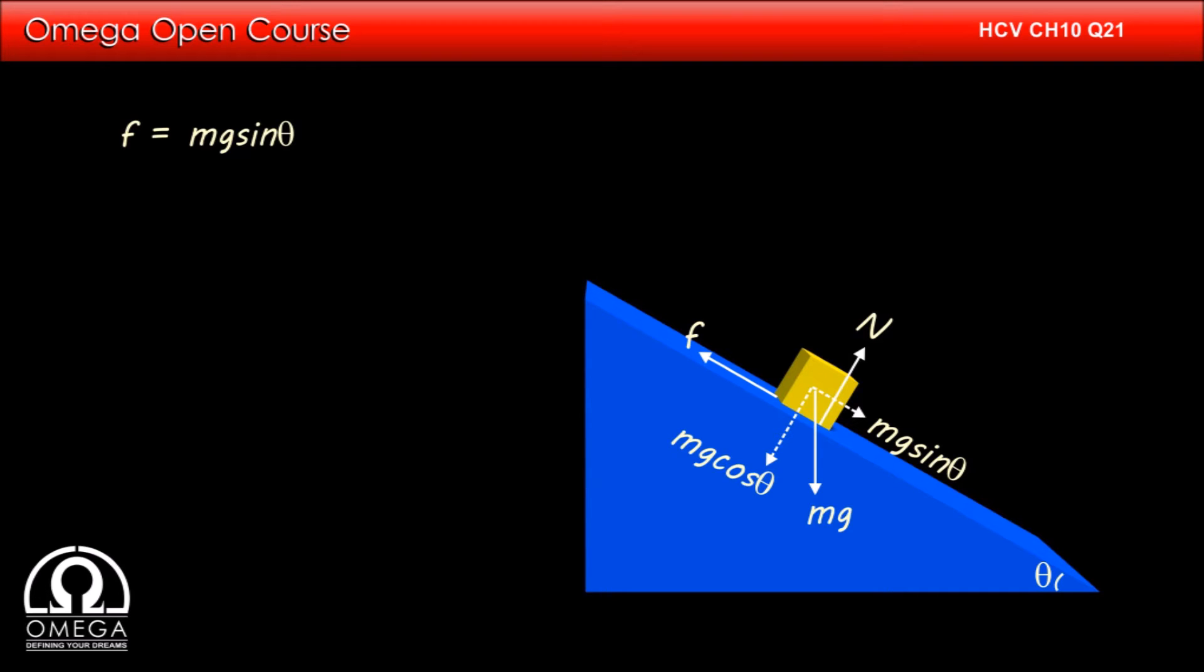The line of action of friction force is at a perpendicular distance of A by 2 from the center of mass of the block. Therefore, the torque due to friction about the center of mass is F into A by 2. Putting friction as Mg sin theta, we get torque is equal to Mg sin theta into A by 2.